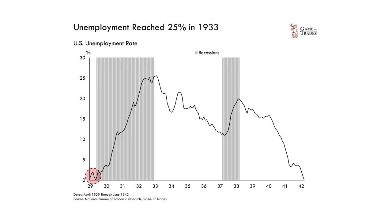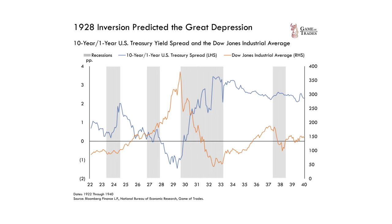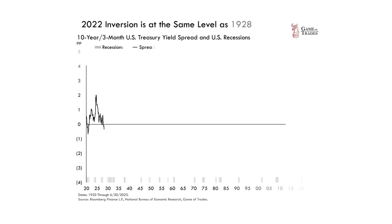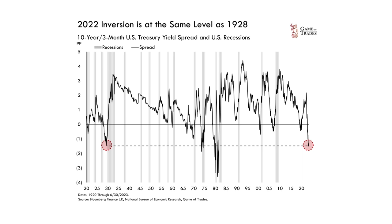The time it takes for a recession to play out in no way predicts how shallow or severe it will eventually be. The perfect example is 1928 — the yield curve inverted, and in the year and a half following, stocks rallied significantly with unemployment between 0% and 3%. Then the Great Depression hit with unemployment rising to 24% and stocks falling 80%. As a notable data point, the yield curve is currently inverted to the same level as it was in 1928, just before the Great Depression — though it also inverted to this extent in the 1970s without that severity, so take that with a grain of salt.